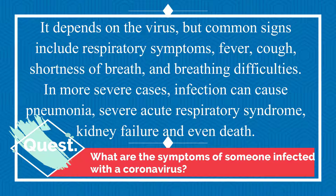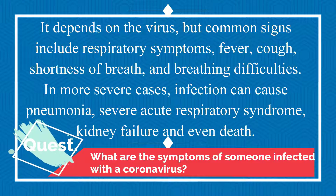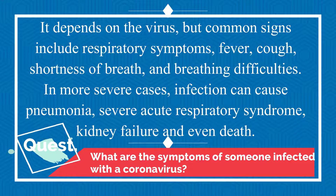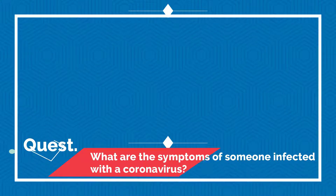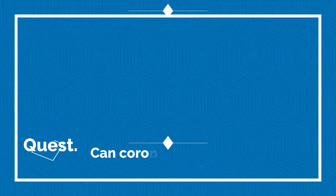In more severe cases, infection can cause pneumonia, severe acute respiratory syndrome, kidney failure, and even death. The common symptoms include respiratory tract infection, fever, cough, shortness of breath, and breathing problems. Can coronaviruses be transmitted from person to person?